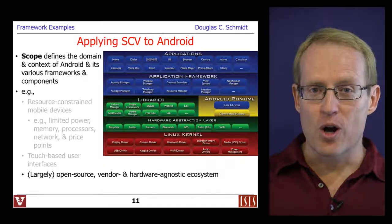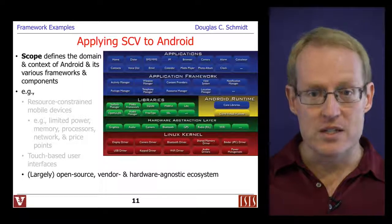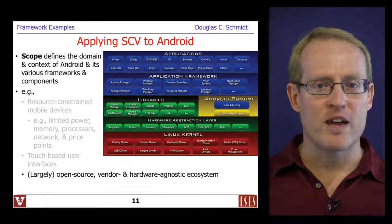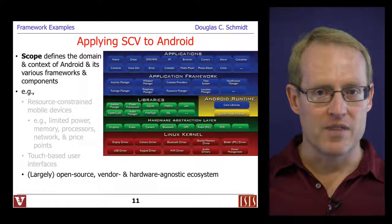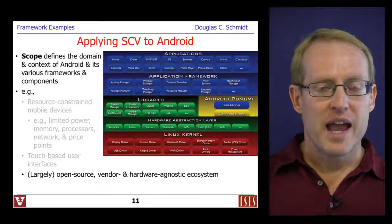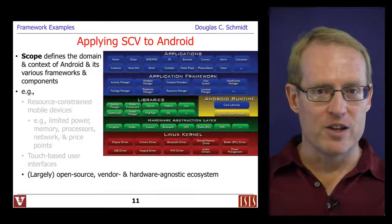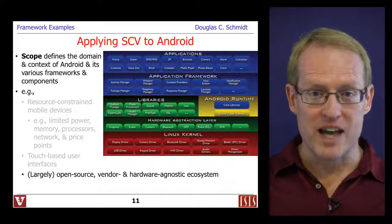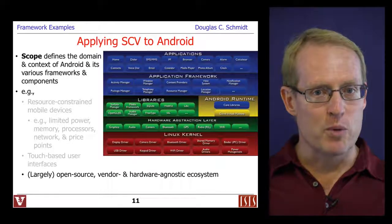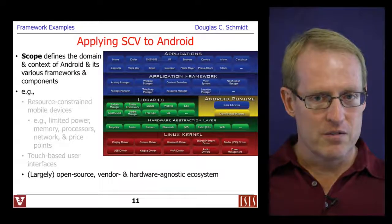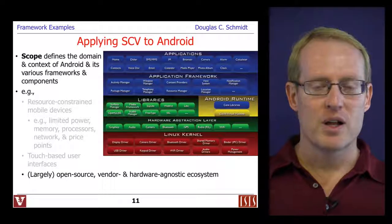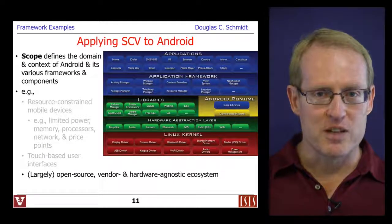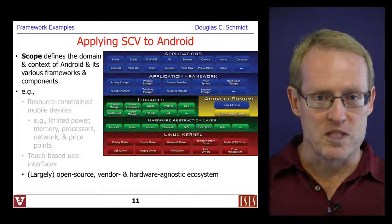Android also provides a largely open source, vendor and hardware agnostic ecosystem. There are some good and technical reasons why some parts of Android are not available in open source form. The architecture of Android actually applies scope, commonality, and variability analysis to determine which parts are fixed — the interfaces, for example — and which parts vary, such as the implementations for specific devices and specific sensors.